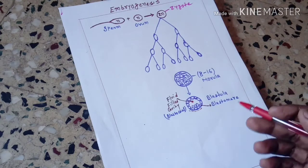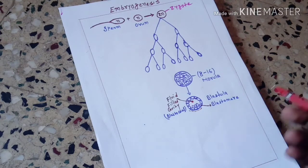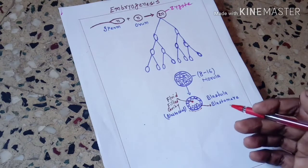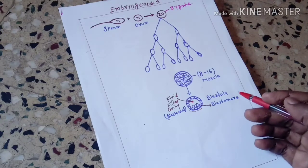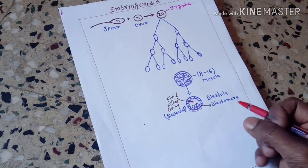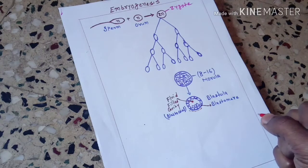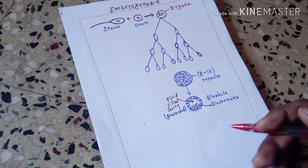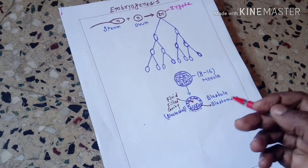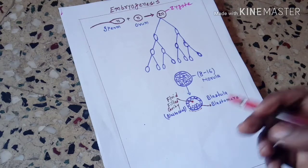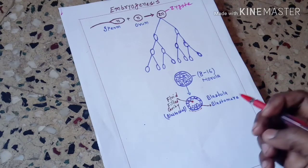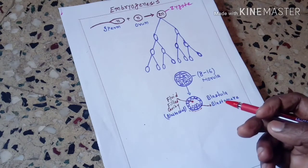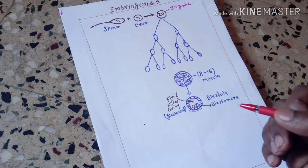After attachment, blood supply begins, through which all the nutrients required for growth are delivered. The blastula cells further divide and produce three separate layers of cells — this process is called gastrulation.